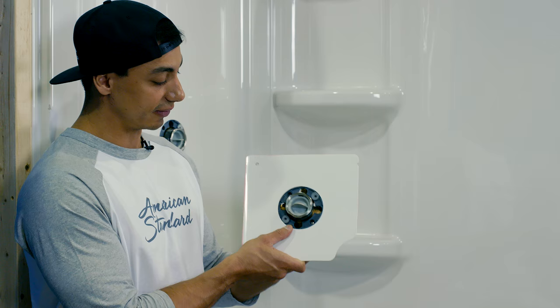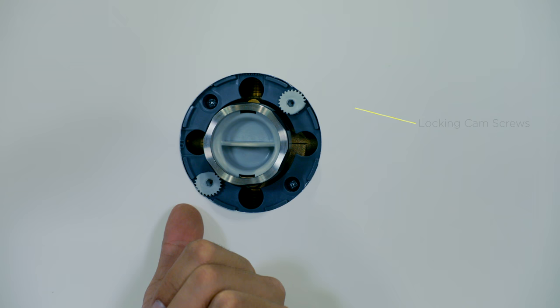These locking cam screws take a standard four millimeter allen wrench. The locking cam screws bite right into the acrylic so the shower valve can be hung before the plumbing is even connected.